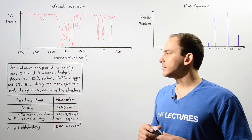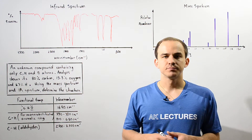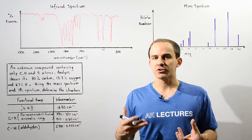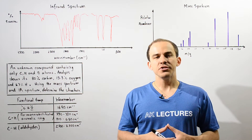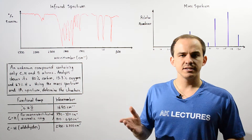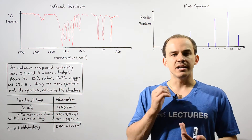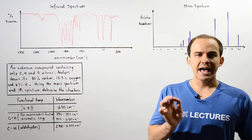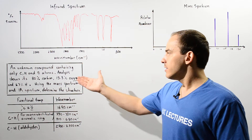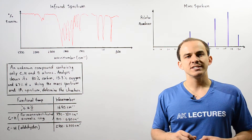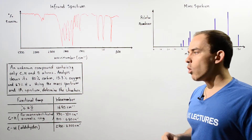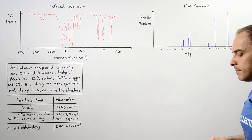Let's take a look at the following example. We're going to combine the concept of mass spectrometry and infrared spectroscopy to determine what the structure of an unknown compound is. Suppose we have an unknown compound that consists of three atoms: carbon, hydrogen, and oxygen. After conducting elemental analysis, we find that it consists of 80% carbon, 13.3% oxygen, and 6.7% hydrogen. Using this information, the mass spectrum, and the infrared spectrum, we want to determine the structure of our unknown compound.